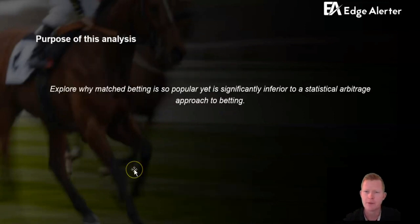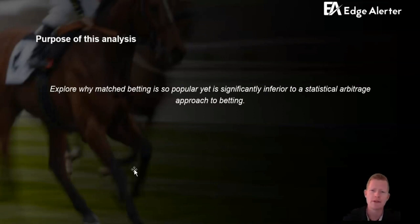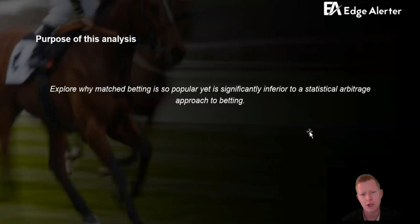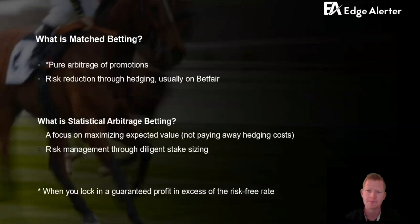Matched betting is extremely popular globally — if you google it, the internet does light up. There are an estimated well over 1 million people globally doing matched betting. For those not familiar, it'll be interesting to learn how that works. I'm also going to go through a proof of how the matched betting approach is mathematically suboptimal, especially in comparison to a statistical arbitrage approach.